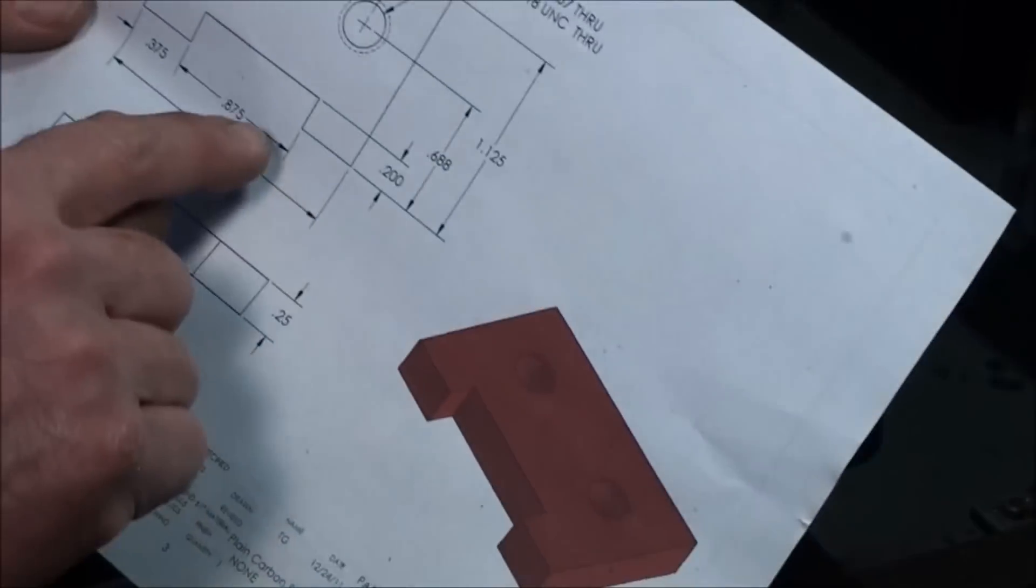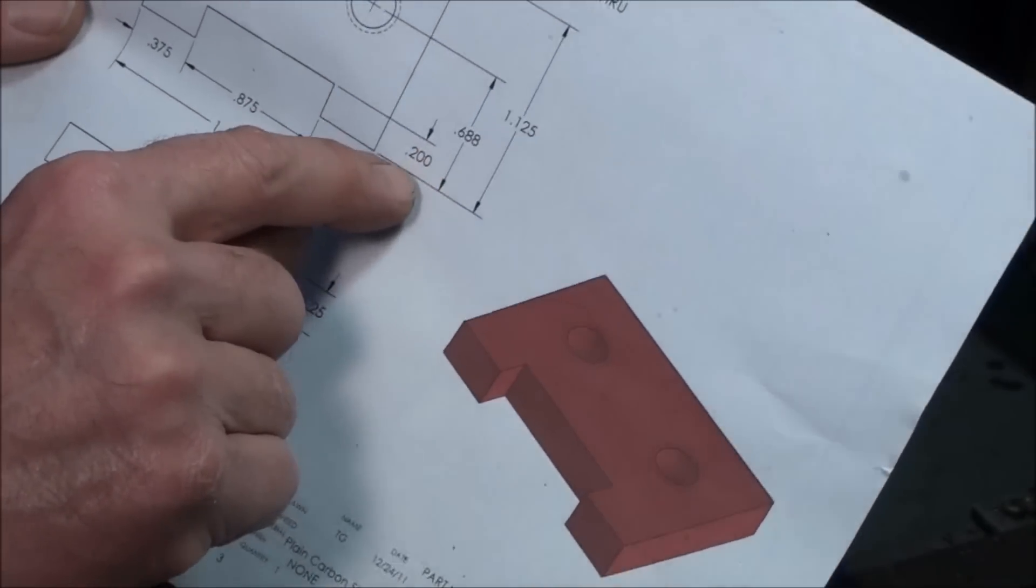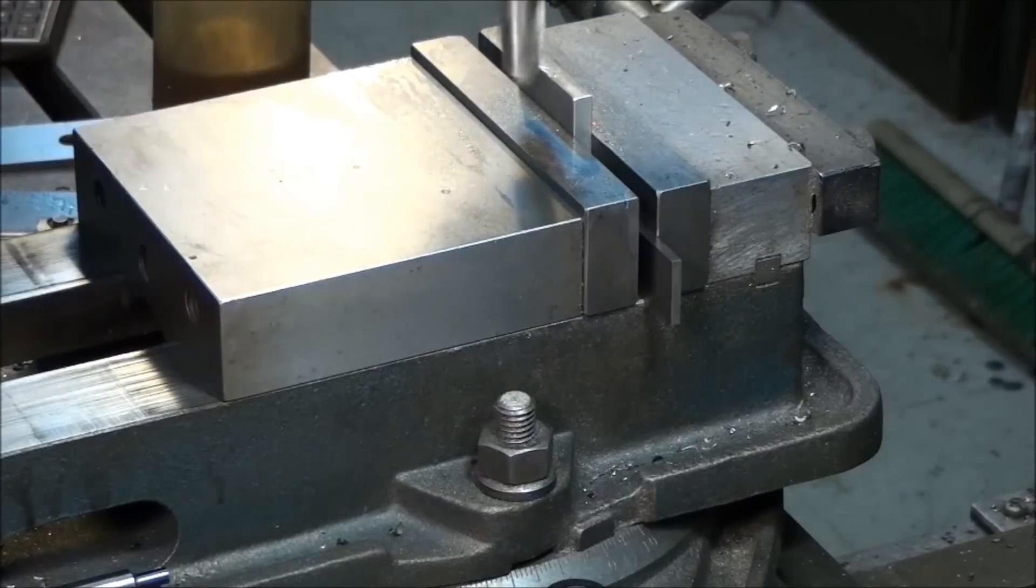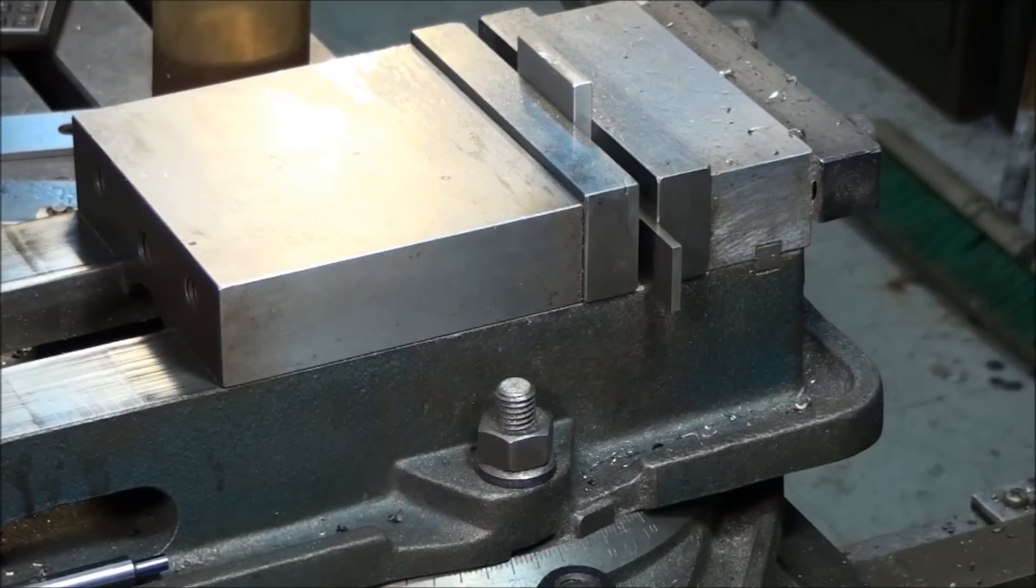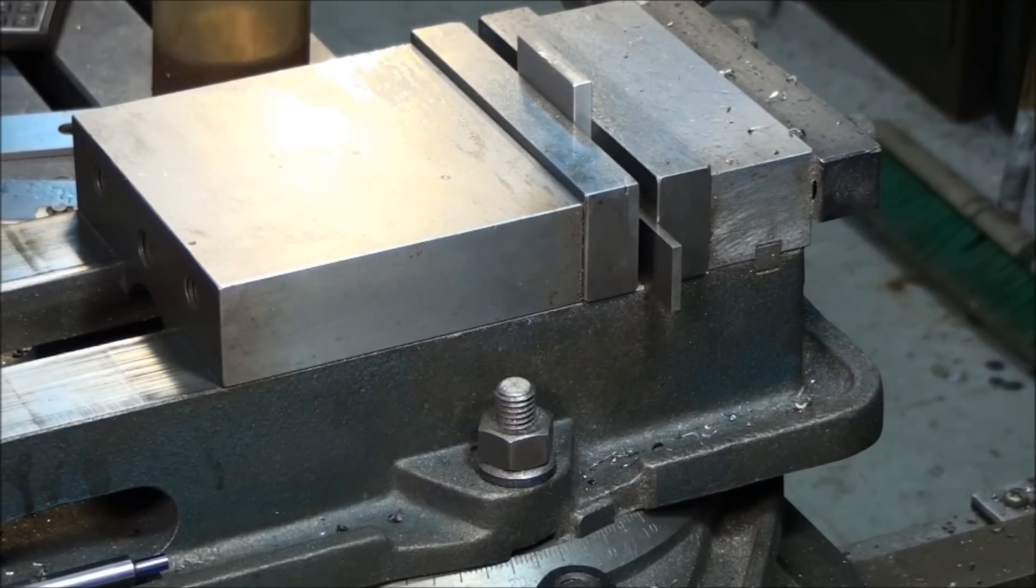So now let's set the depth. This notch has to be 200 thousandths deep, so I'm going to raise my table up 200 thousandths. Okay. Less ten for a finished cut.